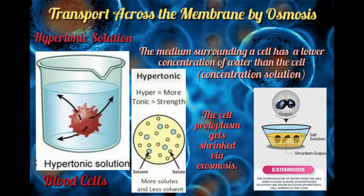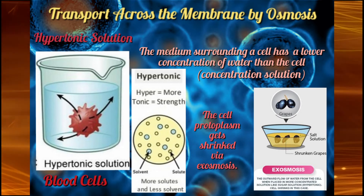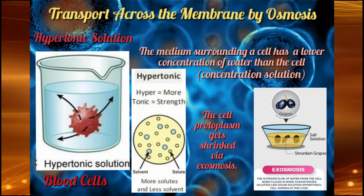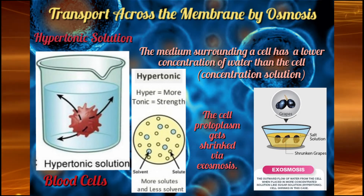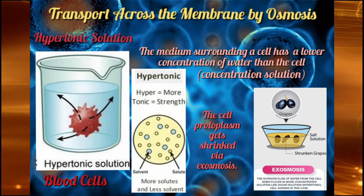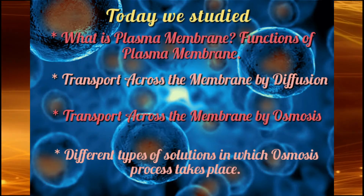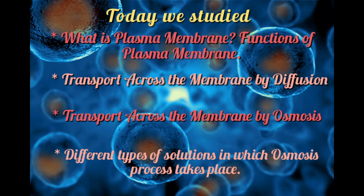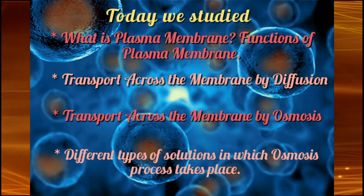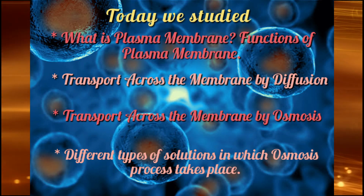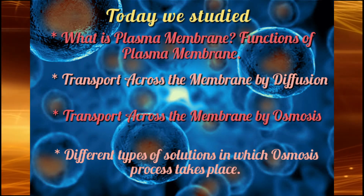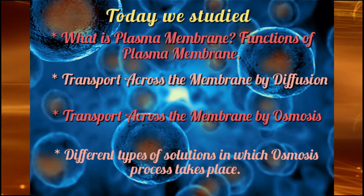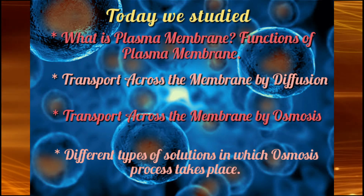Unicellular freshwater organisms and most plant cells gain water through osmosis. Absorption of water by plant roots is also an example of osmosis. Today we studied what is plasma membrane and its functions, transport across the membrane by diffusion, and transport across the membrane by osmosis and the types of solutions in which osmosis takes place. In our next video, we'll study about other features of a cell and the complex organelles present inside the cell.